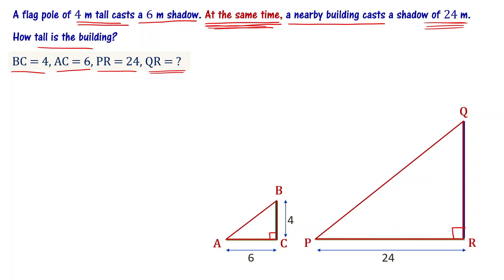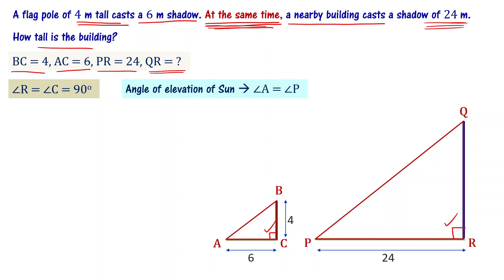Now look at these two triangles. Angle R equals angle C equals 90 degrees, because the flagpole or building stands perpendicular to the earth's surface. Second, the angle of elevation of the sun is the same, so angle A equals angle P. Two angles of triangle PQR are equal to two angles of triangle ABC.